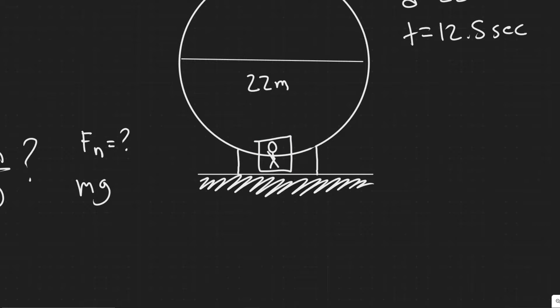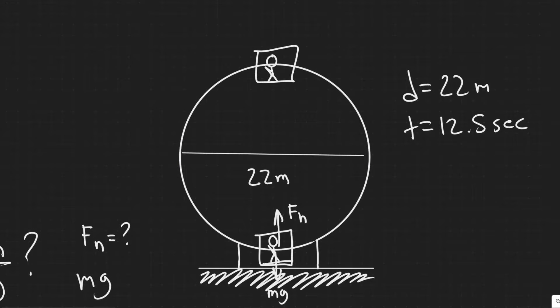So we know at this point, we have mg going down. And then the normal force is going to be pushing up against them on the seat, right? So you imagine their seat, and it's pushing up against them. And then here, you once again have mg going down, and then the normal force is pushing up against their seat.